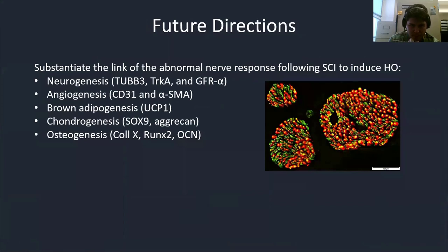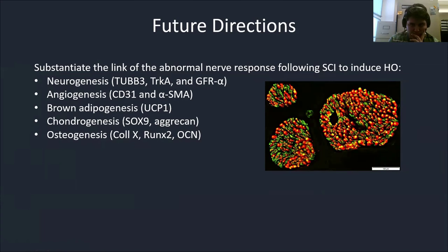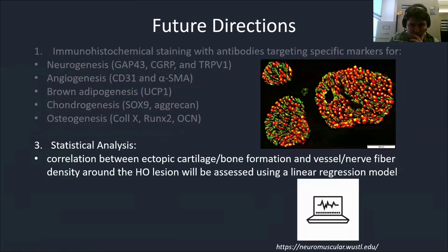Now that we've developed and established our HO model, our future directions involve utilizing this model to substantiate the link of an abnormal nerve response following spinal cord injury, and how that triggers resident mesenchymal stem cells to induce HO. We are interested in neurogenic, androgenic, chondrogenic, and osteogenic markers. We will also perform linear regression analysis to substantiate the correlation between abnormal bone formation and the upregulation or downregulation of certain neurogenic factors, and how that correlates to HO progression from one to four weeks.